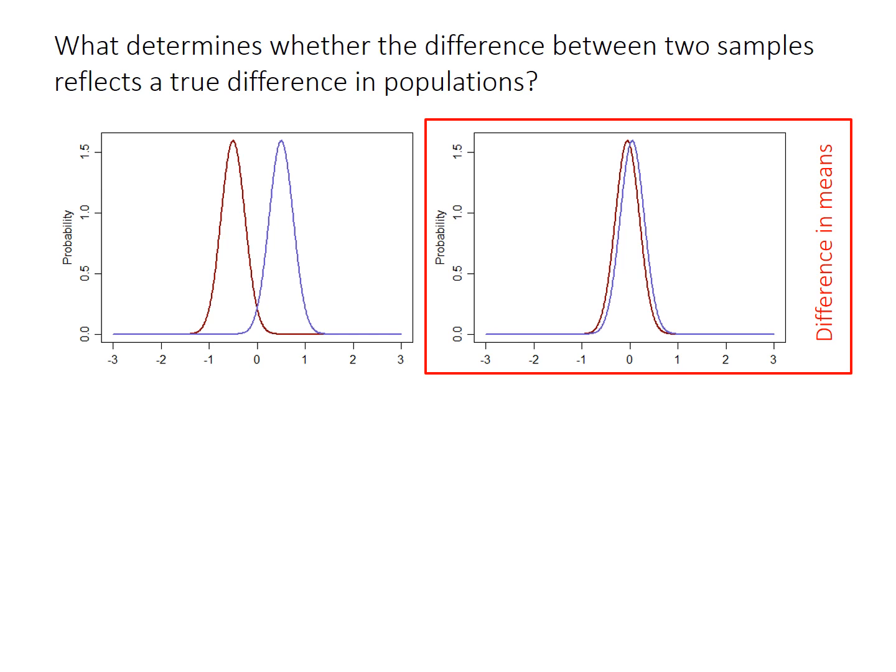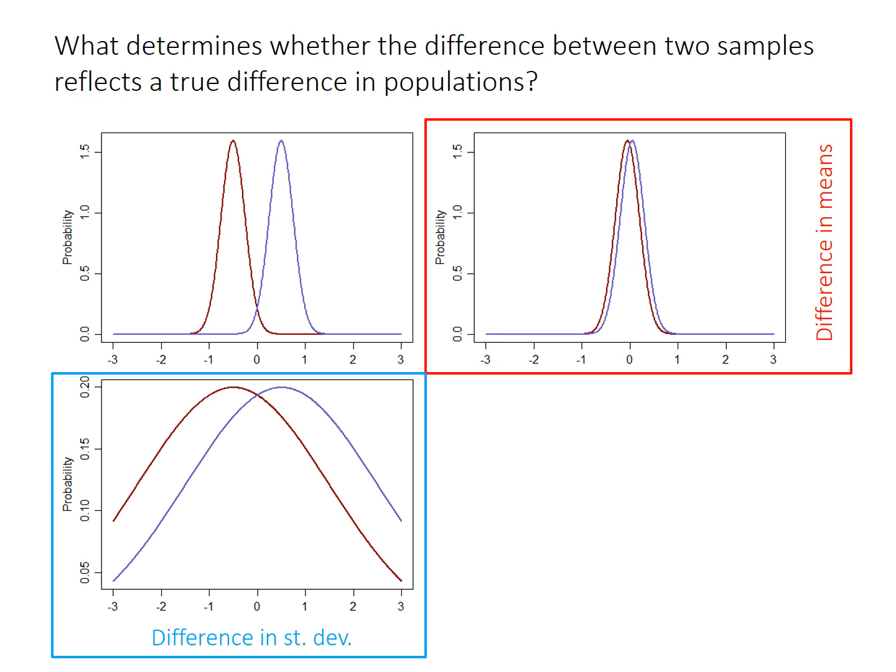These two curves have the same standard deviation as in the example to the left, but the difference is that the sample means is much, much smaller. In this third example, the difference between sample means is the same as in the graph directly above it, but each distribution has a larger standard deviation. As a result, you probably wouldn't think intuitively that the two came from different populations — they overlap quite a lot, so they're probably not actually that different.